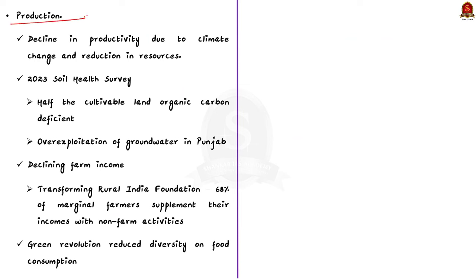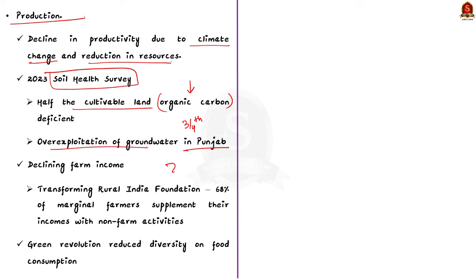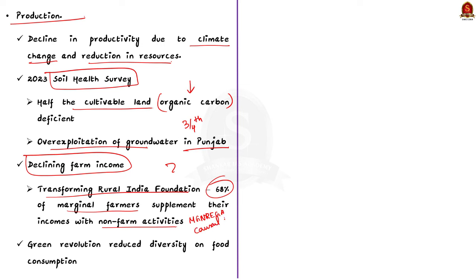On the production side, decreasing food productivity due to decline in natural resources and climate change is a major problem. According to the 2023 Soil Health Survey, half of the cultivable land in India has become deficient in organic carbon. In states like Punjab, three-fourths of the groundwater source is over-exploited. According to a report by the Transforming Rural India Foundation, more than 68% of marginal farmers supplement their incomes with non-farm activities. You can also mention the ill effects of the green revolution on food diversity.